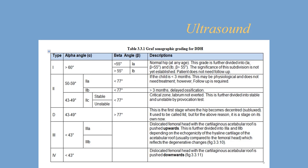Having measured alpha and beta angle, we can subtype the hip. To identify types 1, 2, 3, and 4 we don't strictly need the angles, but the angles confirm them. For type D, we do need alpha and beta angle. For type 1, the alpha angle is above 60 degrees regardless of beta angle. There is an observation that some type 1 hips have beta angle less than 55 and some above 55; the significance is not fully established, but it may relate to future hip development and potential impingement risk.